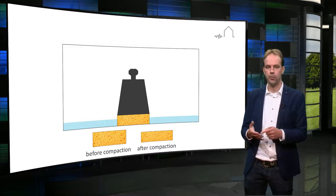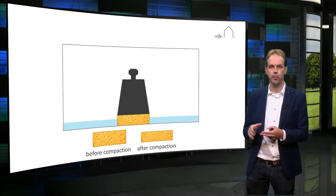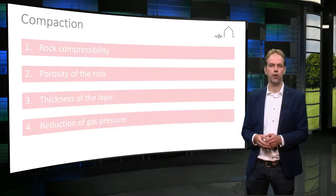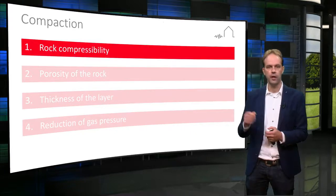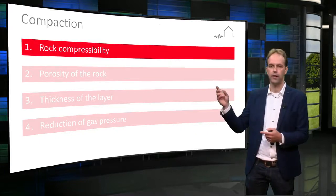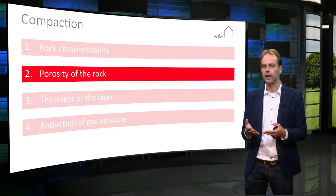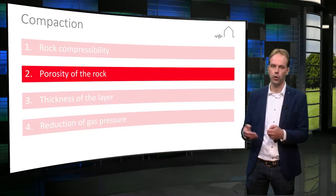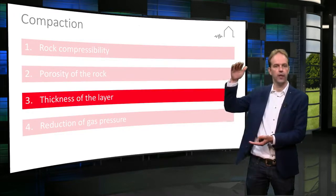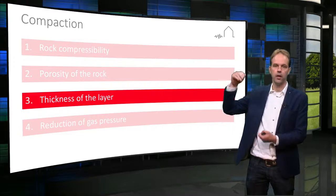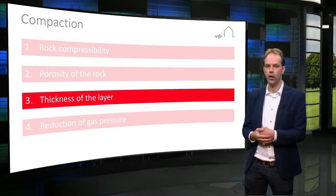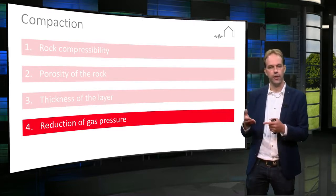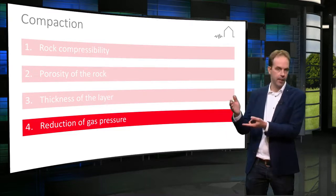In Groningen this gas production-related compaction is estimated to be around 40 cm. Compaction depends on at least 4 parameters: firstly, rock compressibility, which is material dependent; secondly, the porosity of the rock — the more porous the rock, the more likely compaction is to occur; thirdly, the thickness of the layer — the thicker the layer, the more reduction in reservoir thickness can occur; and lastly, the gas pressure reduction in the reservoir — the greater the reduction in pressure, the more compaction can be expected.